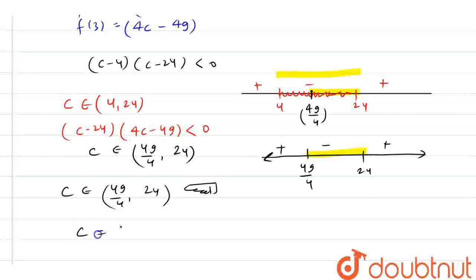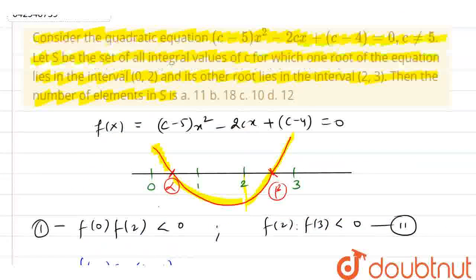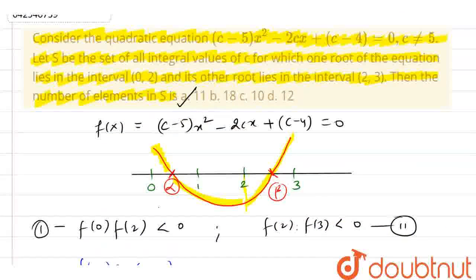Now what should be the integral values in c? So 49/4 is basically 12 point something. So the next integral value is 13, 14, 15, 16, 17, 18, 19, 20, 21, 22, 23. Now how many values are there? 11 values. So I can say the number of elements in set S is 11. So my final answer here is option A. Thank you.